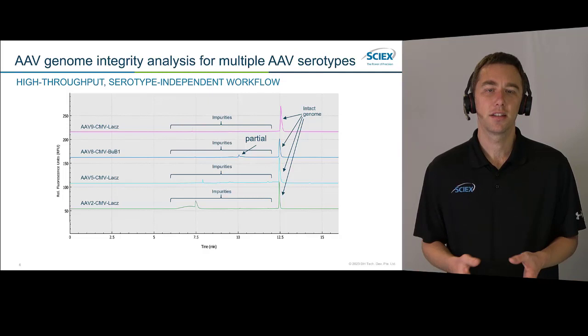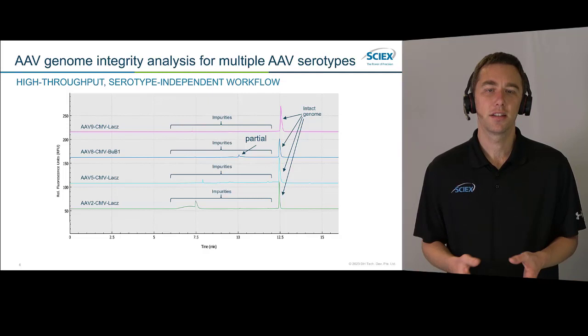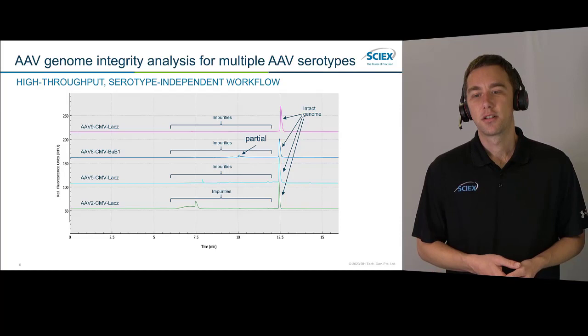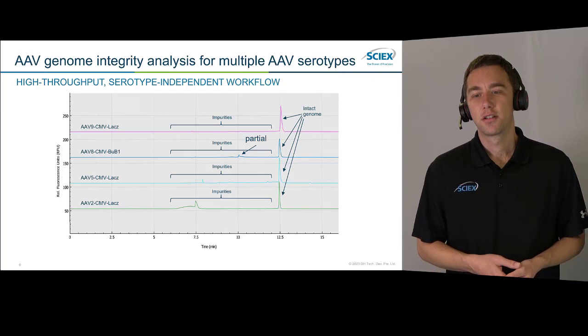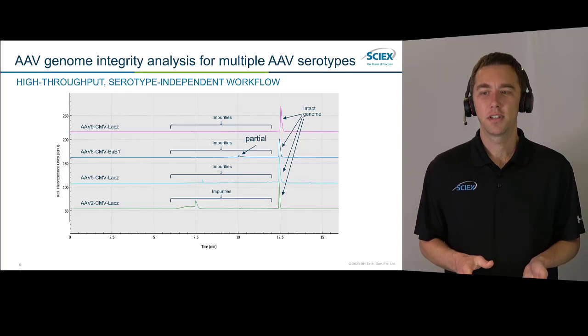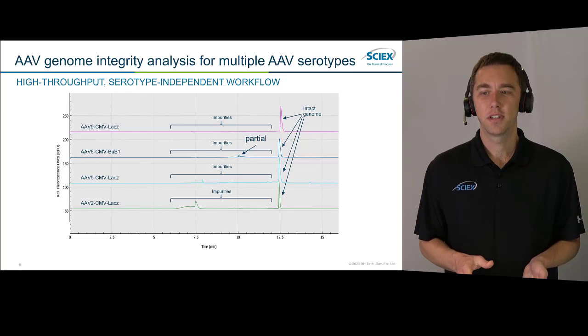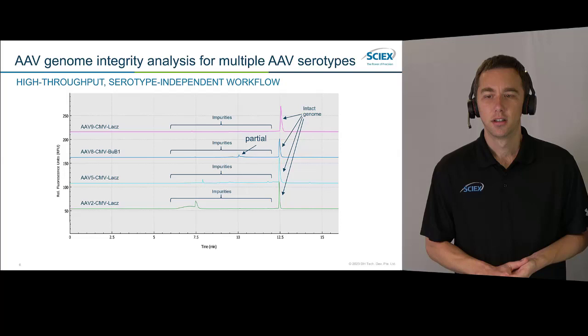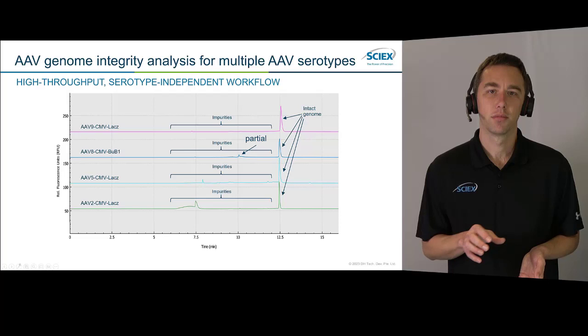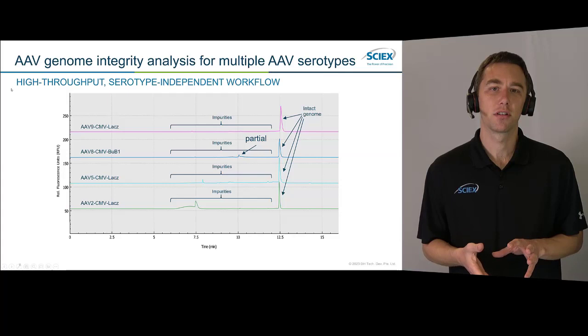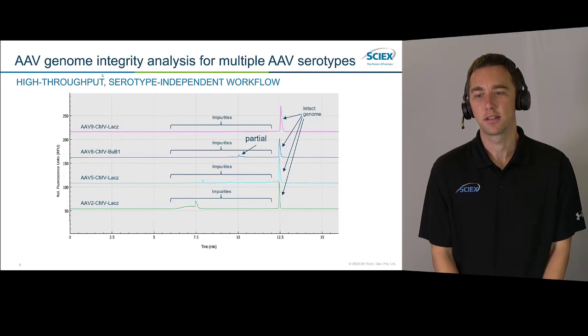This method is really serotype independent. In fact, it can work on any type of single-stranded nucleic acid sample that you have. Here we're looking at four different AAV serotypes: serotype 2, 5, 8, and 9. Each one shows the intact genome coming out at about 12 and a half minutes, with different amounts of related substances or impurities migrating well before it. All we're doing in this assay is extracting that genome and running our single-stranded analysis, so as long as we can extract that genome, we get a very high resolution, high throughput method.